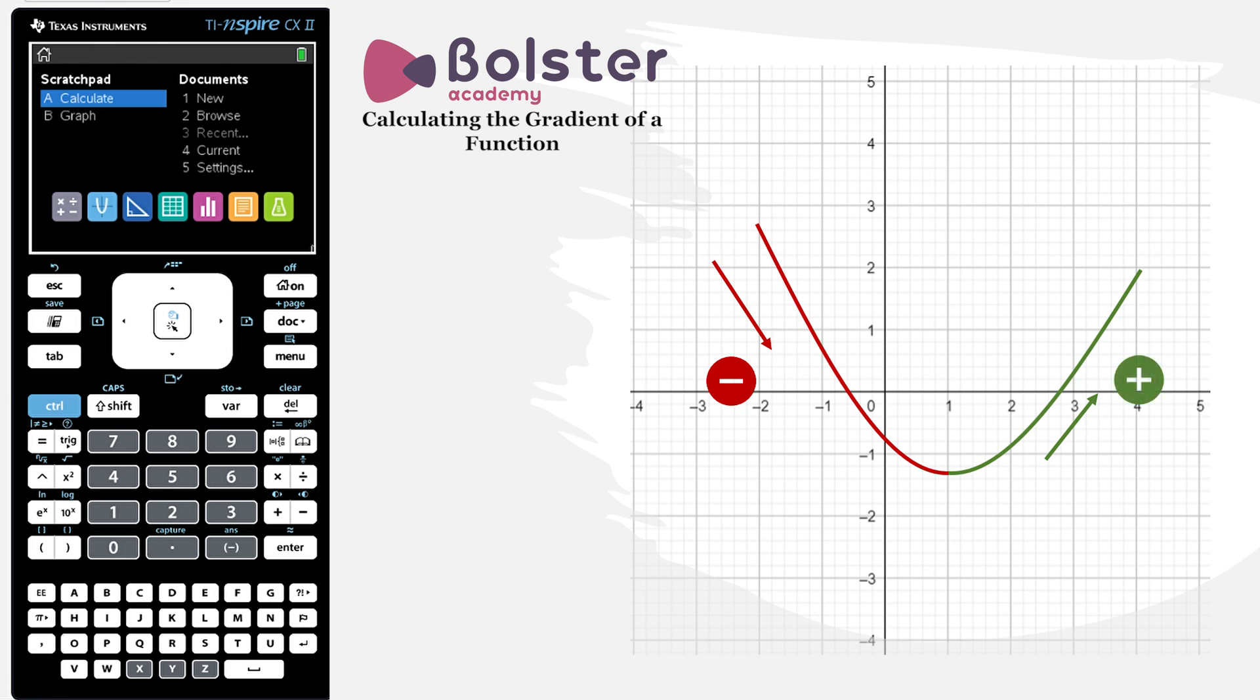When the gradient is zero, the function isn't going down or going up. And we normally call this a stationary point.